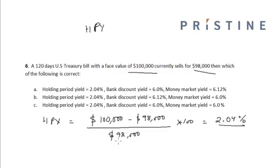One thing to note is that in the holding period yield, we have not accounted for the 120-day period. It is simply the face value minus the price, divided by the price, into 100, which is equal to 2.04%.